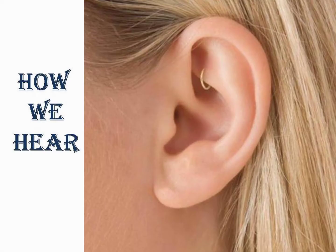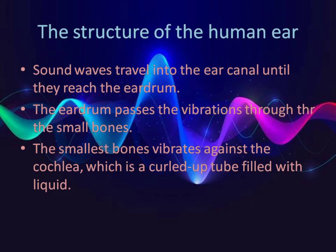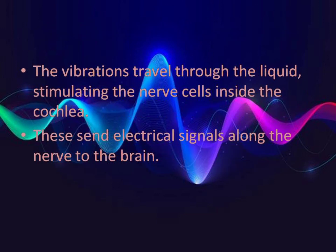Here is our last topic: how we hear. Our ears are our sound detectors. The diagram shows the structure of an ear. Sound waves travel into the ear canal until they reach the eardrum. The eardrum passes the vibrations through the three small bones. The smallest bones vibrate against the cochlea, which is a curled-up tube filled with liquid. The vibrations travel through the liquid, stimulating the nerve cells inside the cochlea. This sends electrical signals along the nerve to the brain.